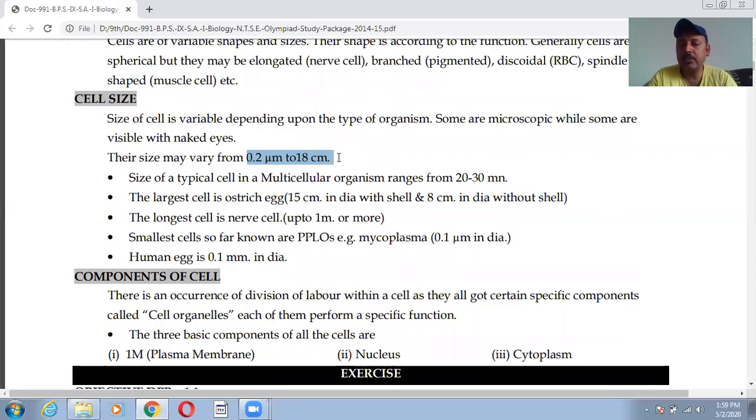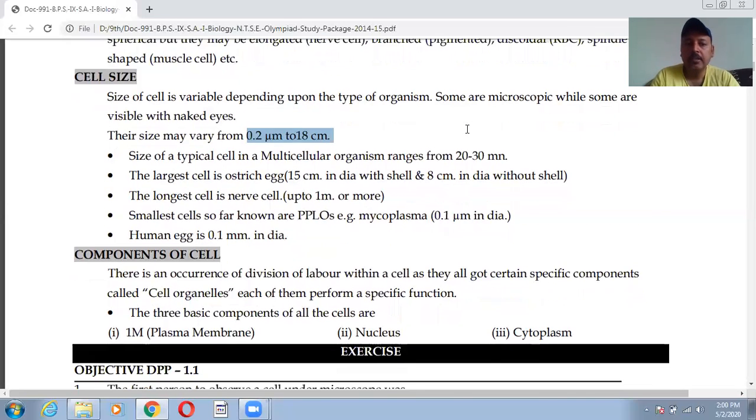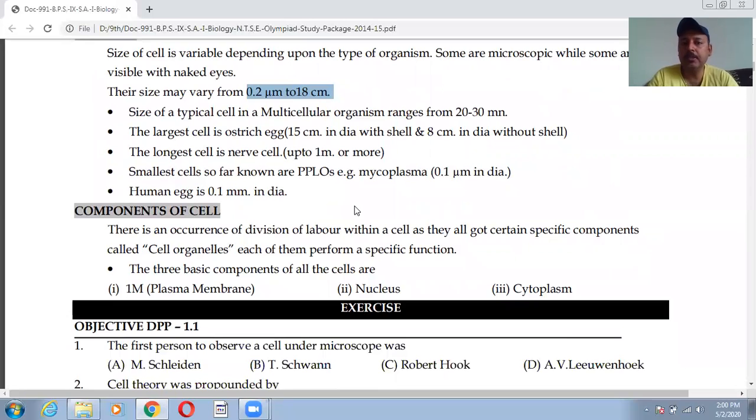Minimum or the smallest is you can say 0.2 micrometer. Just imagine micro means 10 to power minus 6. Same way size of typical cell in a multicellular organism ranges from 20 to 30 micrometers. The largest cell is ostrich egg, longest cell is nerve cell, and the smallest cell is PPLO or we can say Mycoplasma, 0.1 micrometer in diameter. Human egg is 0.1 mm in diameter.